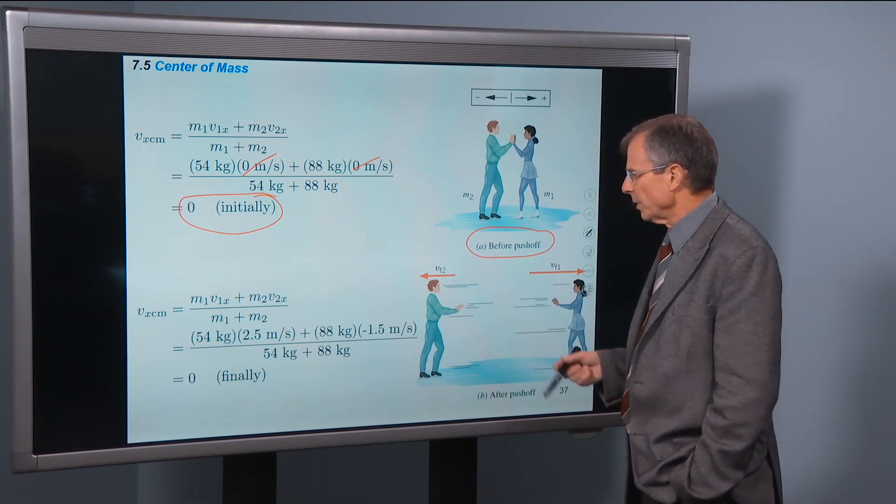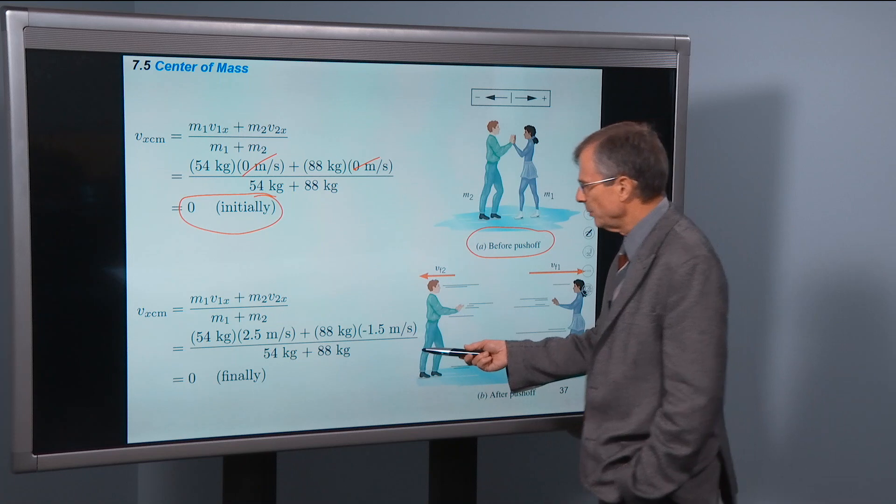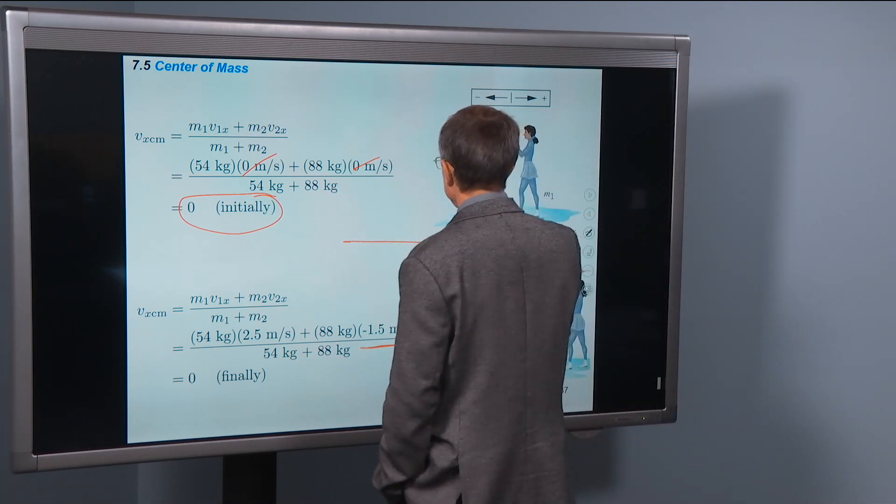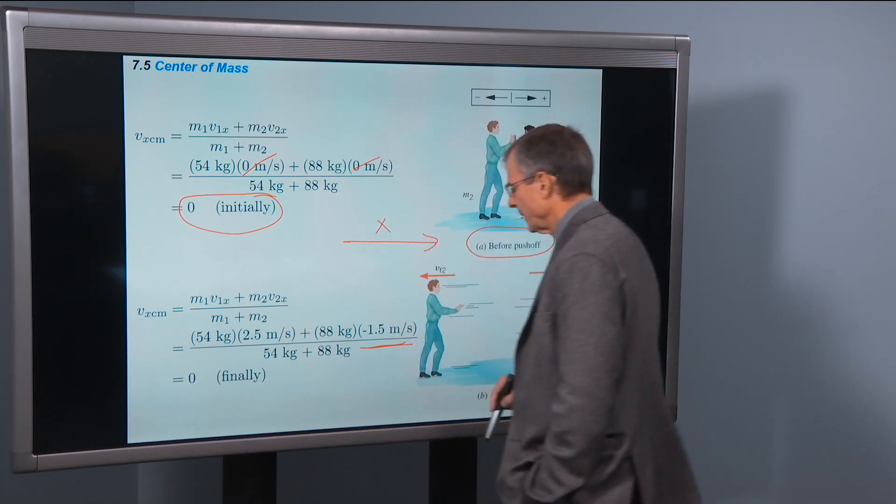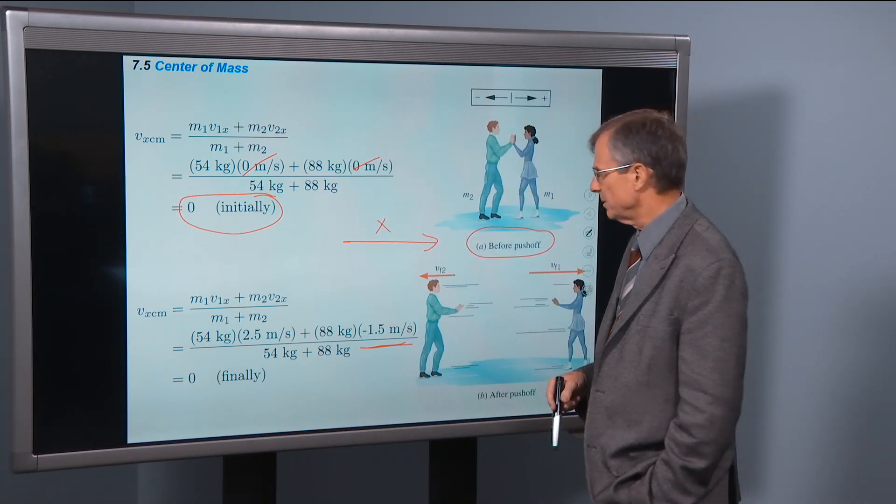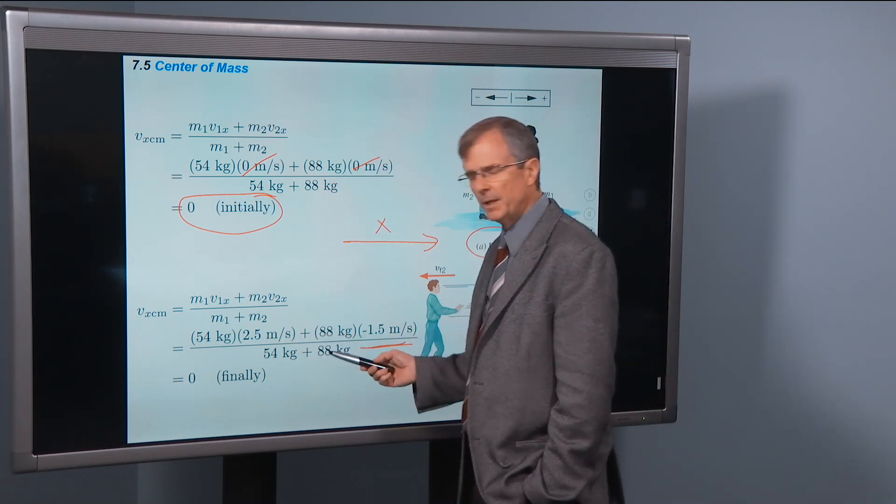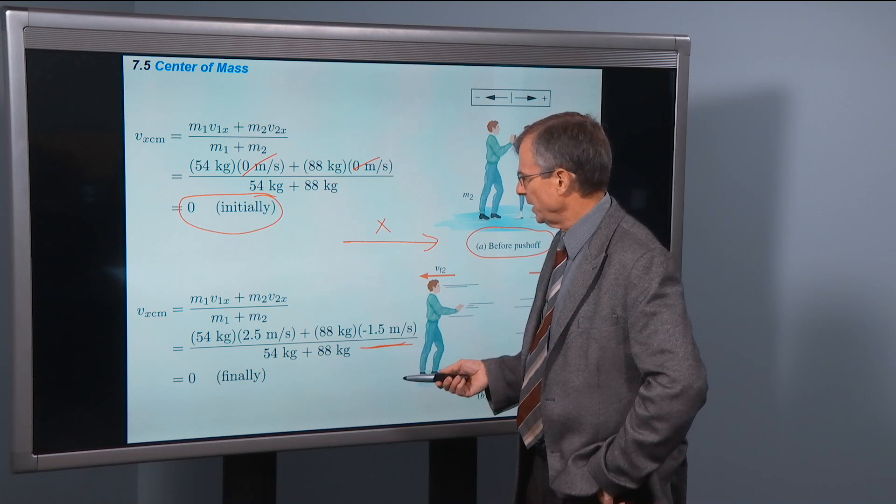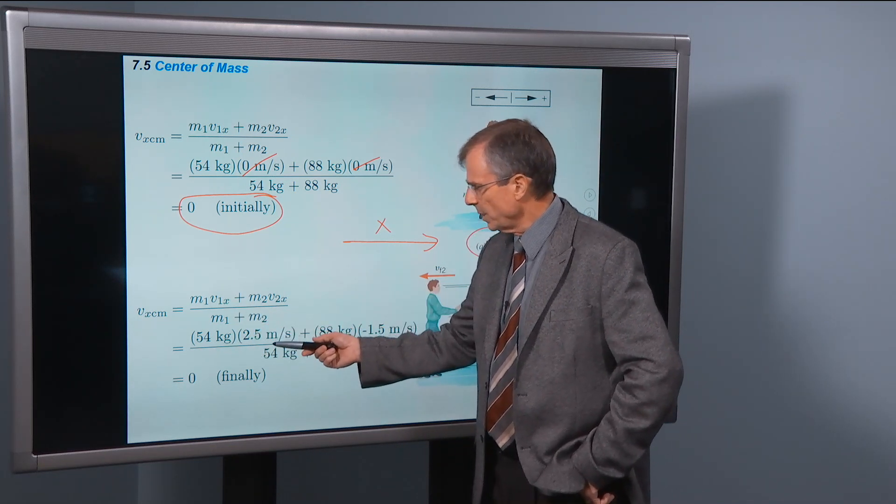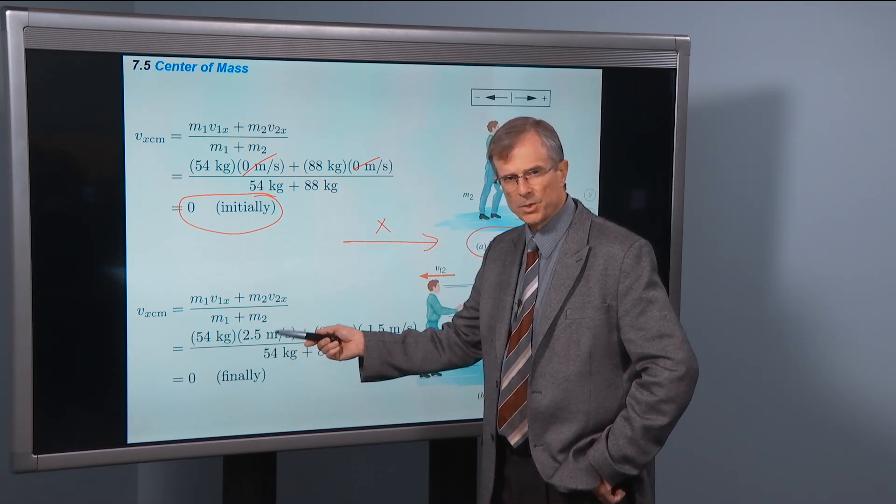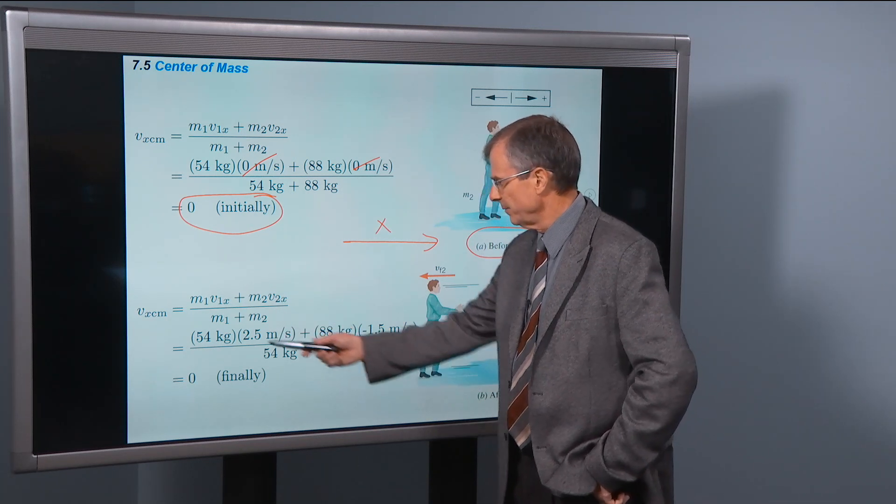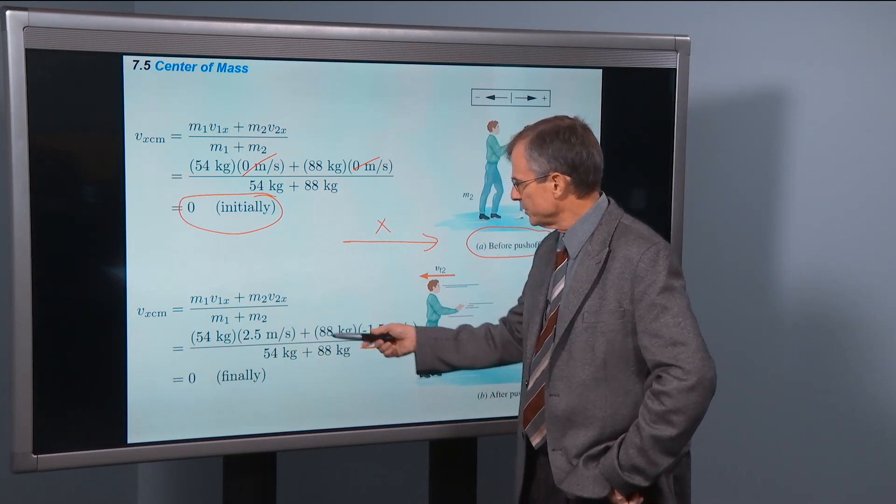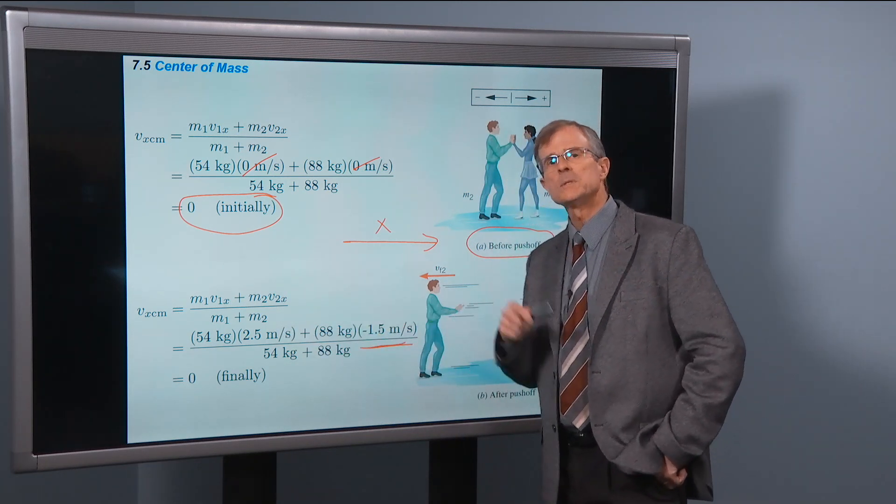What about finally? Well, we worked out what the man's final velocity would be. It had to be negative 1.5 meters per second, and we had an x direction that looked like that. The woman's velocity was given to us. If you plug the numbers in, m1 v1x - that's her final velocity - 54 kg, her mass, times her final velocity, plus m2, the mass of the man, times his final velocity, it was negative.